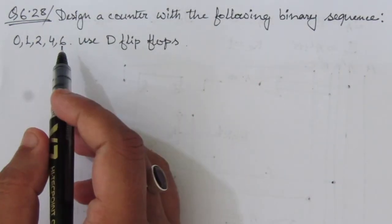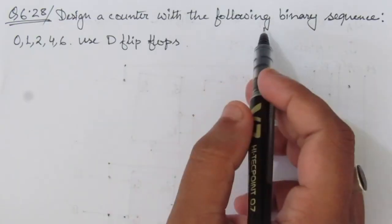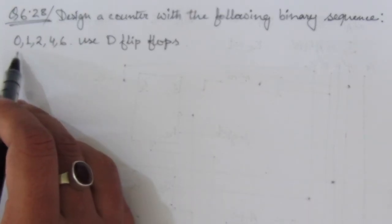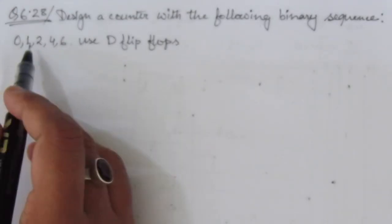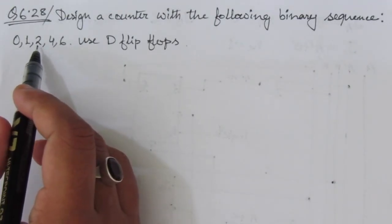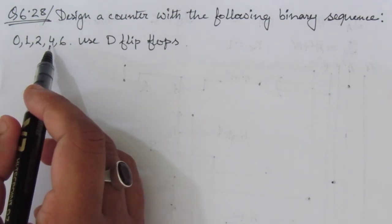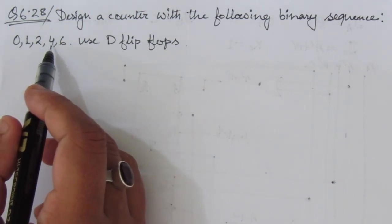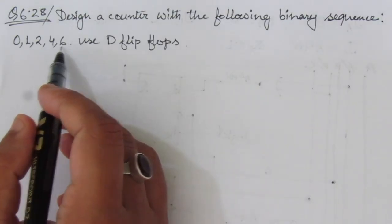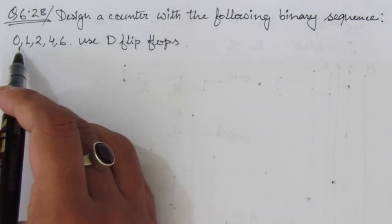The problem is to design a counter with the following binary sequence: 0, 1, 2, 4, 6. That means whenever we have 0, it will go to 1. Whenever we have 1, it will go to 2. Whenever we have 2, it will go to 4. Whenever we have 4, it will go to 6. And after 6, it will go back to 0.